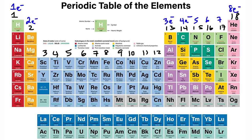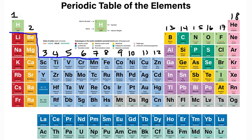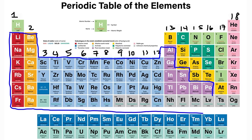The number of valence electrons gives us an idea of the type of charges these elements will form. On the left side of the periodic table we have the metals. Metals are electrical conductors — they allow electricity to flow through them. They can also conduct heat, they're malleable (they can be hammered into sheets), and ductile (they can be pulled into wires).